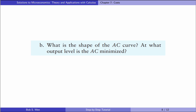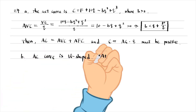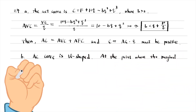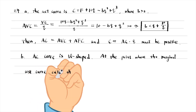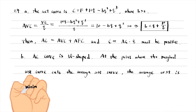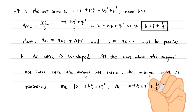In part B, what is the shape of the average cost curve? At what output level is the average cost minimized? The shape of the average cost curve is similar to figure 5.1 in the textbook — it is U-shaped. At the point where the marginal cost curve cuts the average cost curve, the average cost is minimized. At this level of output, the marginal cost equals the average cost.